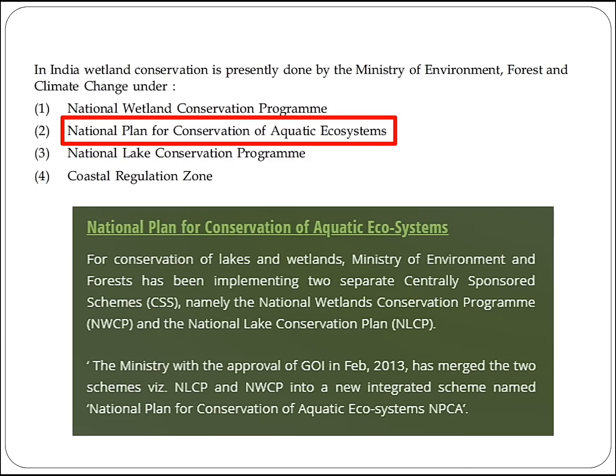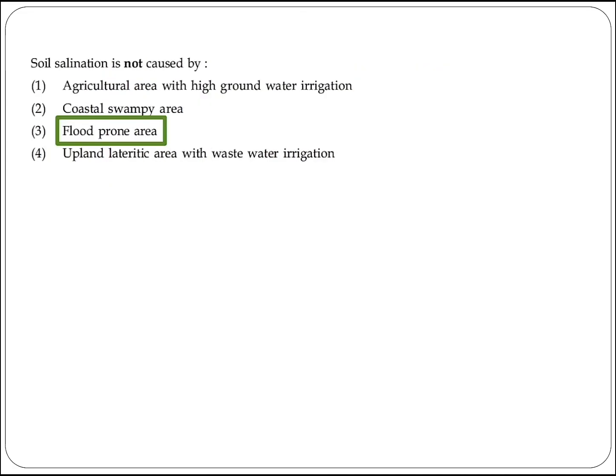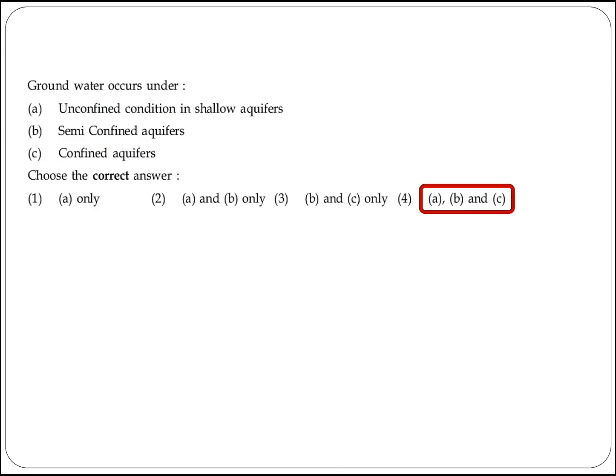The next question asks how wetland conservation is presently done in India. It is done by the Ministry of Environment, Forest and Climate Change under the National Plan for Conservation of Aquatic Ecosystems. Option 2 is the right answer. The following question asks what does NOT cause soil salinization — the answer is flood-prone areas. Option 3 is the right answer.